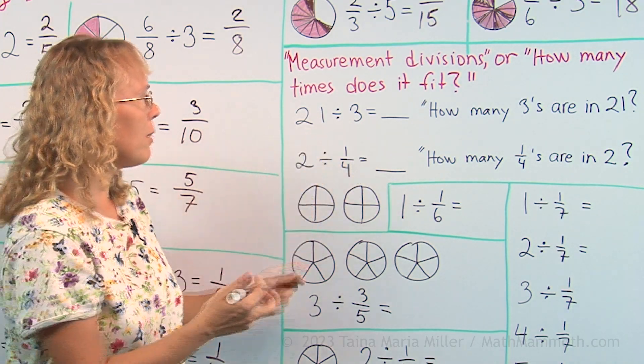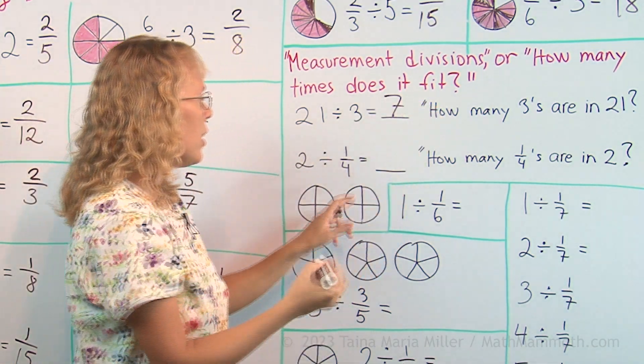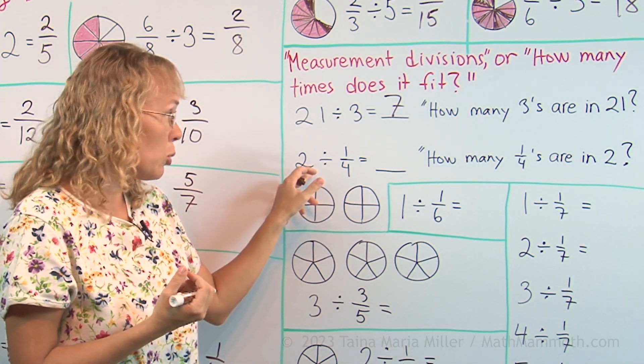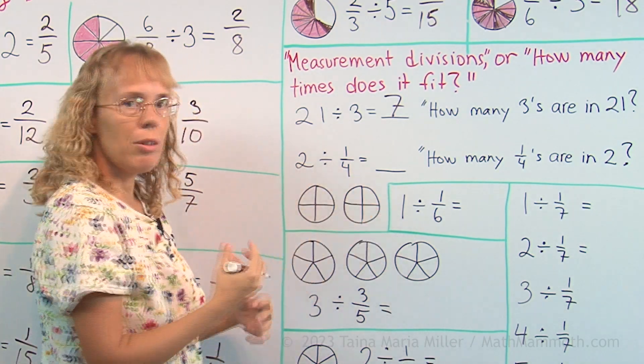How many threes are in 21? Seven. And here, in this division, how many one-fourths, how many fourths are in two, these two pies? How many fourths are in it?